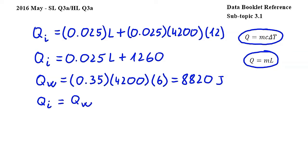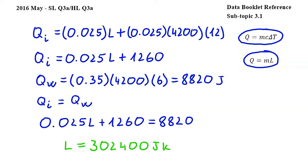Working further we get 0.025 L plus 1260 equal to 8820. Rearranging for L, so subtracting 1260 and dividing by 0.025 we get L is equal to 302400 joules per kilogram